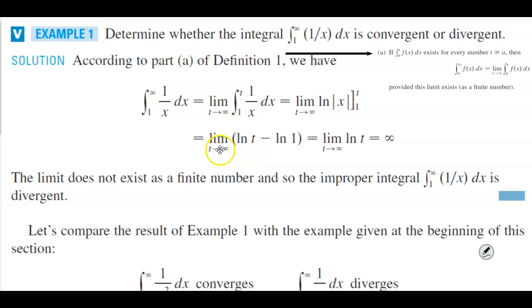We have the limit as t approaches infinity of ln(t) minus ln(1). Applying our logarithmic properties, this becomes ln(t over 1), which just becomes ln(t).